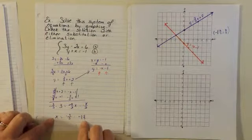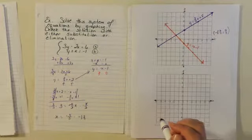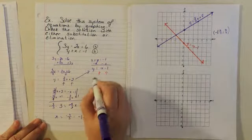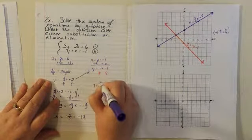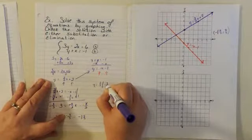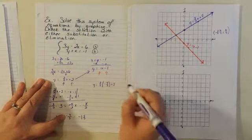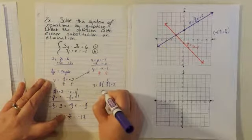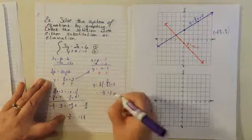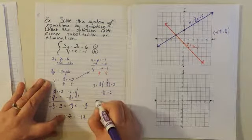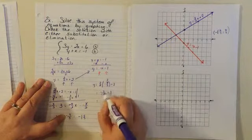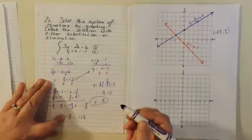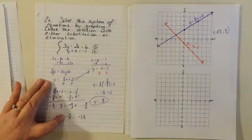Now we can put this back into both equations and solve for y. So y equals 2/3 times negative 9/5 plus 2. The 3s cancel, leaving us with negative 6/5 plus 2. And 2 is 10/5, so y equals 10/5 minus 6/5, which equals 4/5. So y equals 4/5. I had said 6/7 — so I was pretty close.